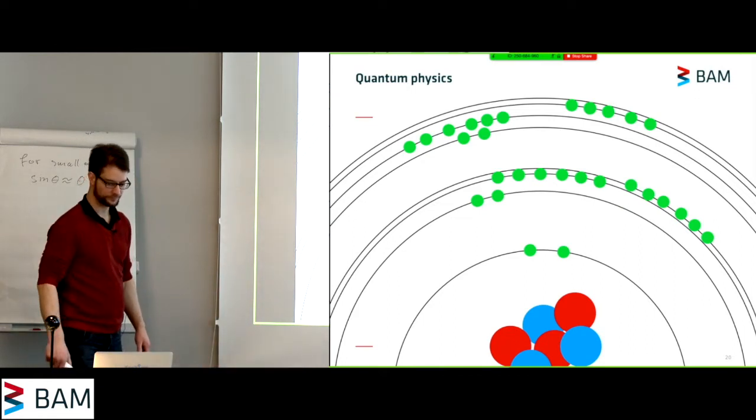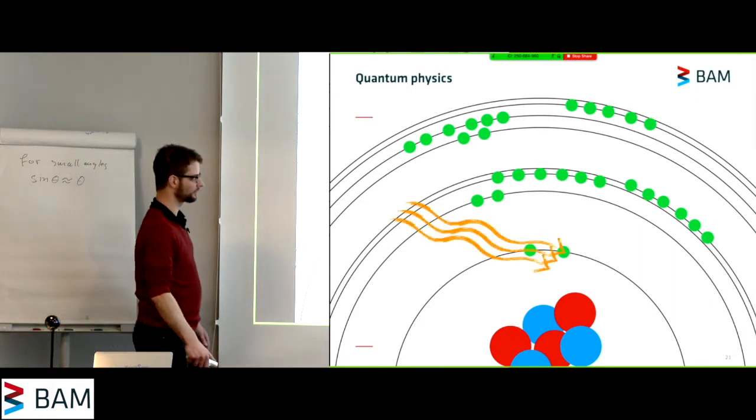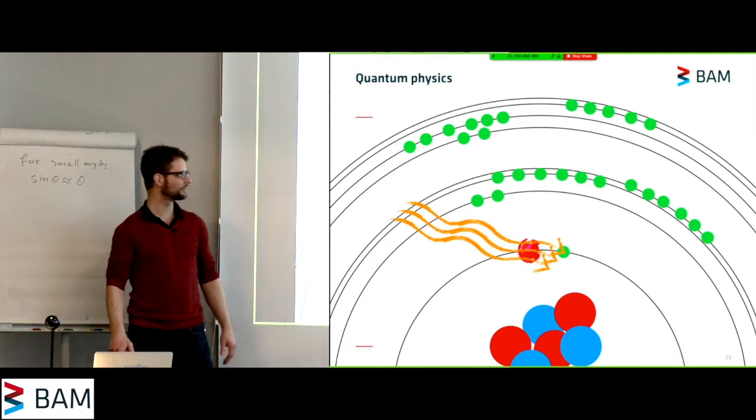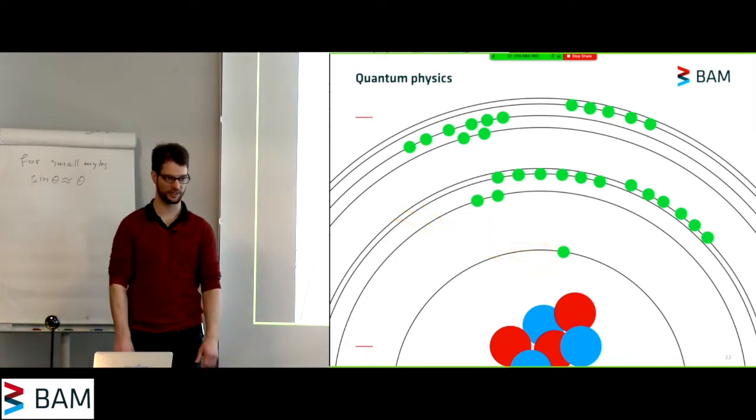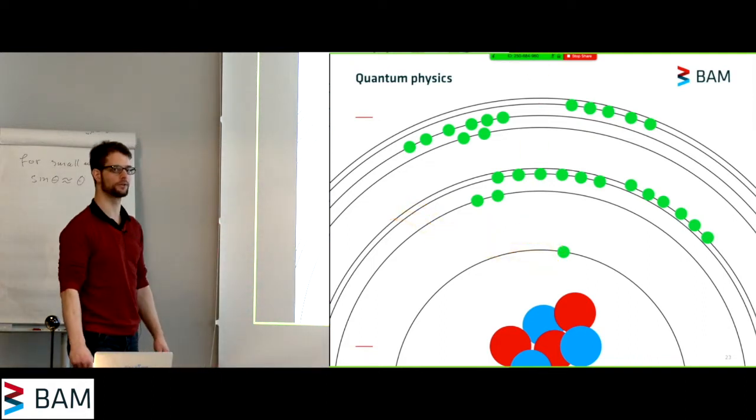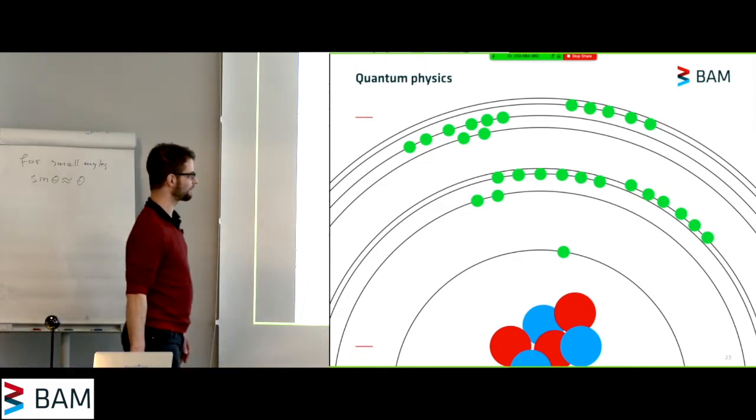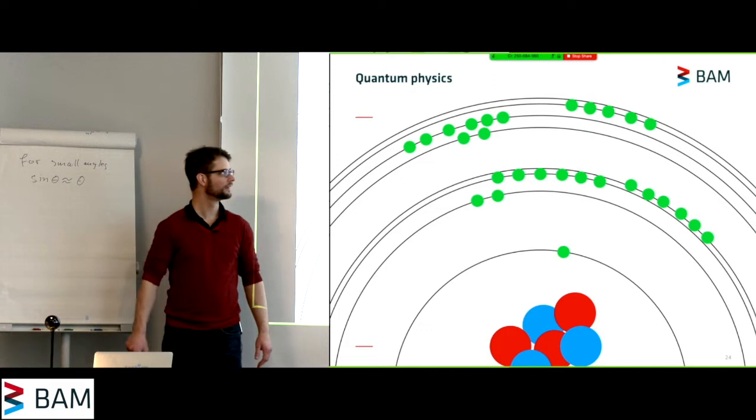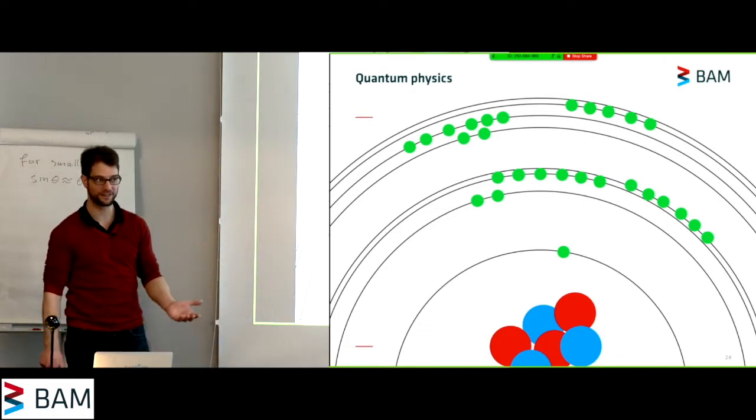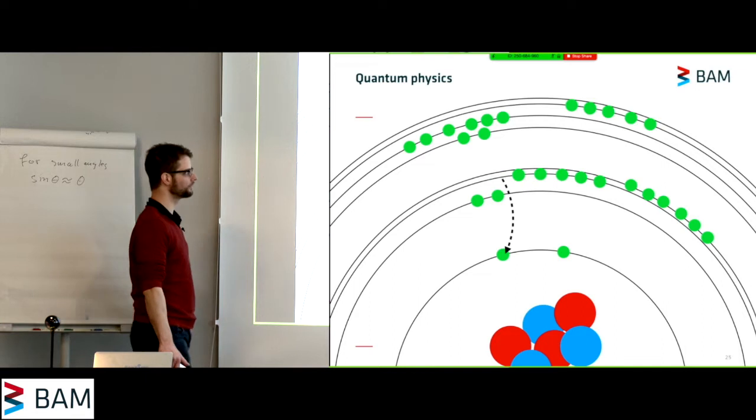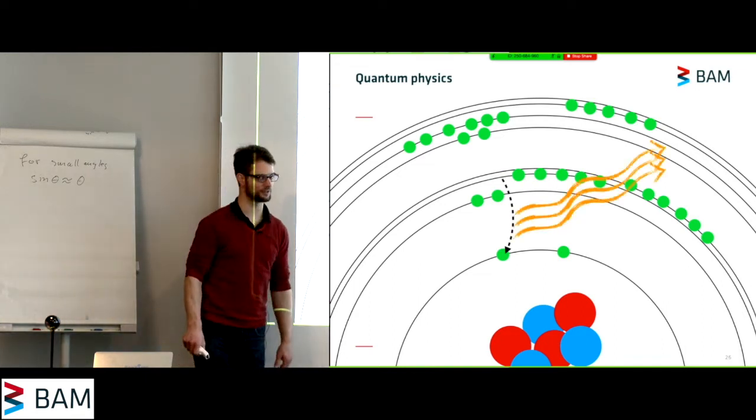Now what you can do is you can excite one of the electrons and maybe make it go completely out or to the conduction band, thereby creating this gap in the electronic structure. An electron from one of the higher levels, one of the compatible higher levels, can then fall down, creating x-rays in this process.